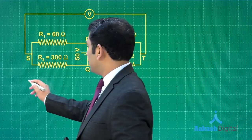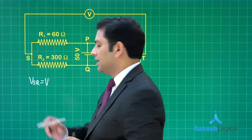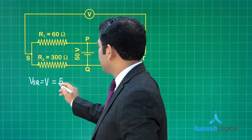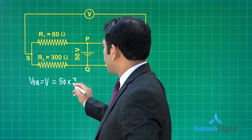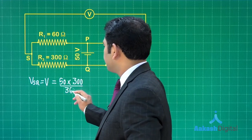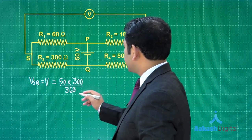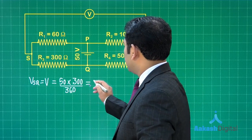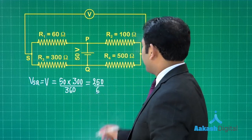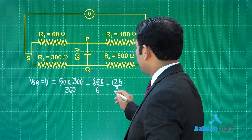So the original value of potential difference between s and q, let me call as V, that is equal to 50 into 300 divided by 360. So that is a simple voltage division. Now this is going to be equals to 250 divided by 6, or you can write it as 125 divided by 3 volt.